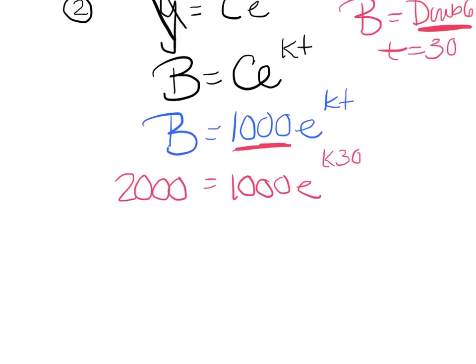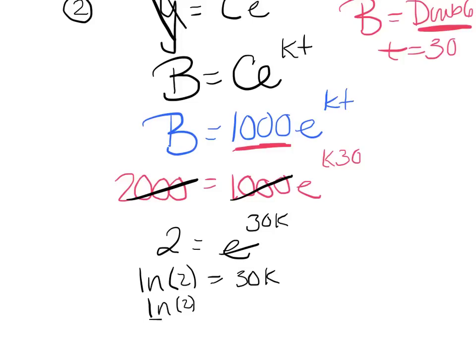Now we just quickly solve. I can divide out my 1,000. So I've got 2 equals e^(30k). Take the ln of both sides. Little zap rule there. That'll kill that. Equals 30k. And I've got ln(2)/30 equals k. Now I'm not done. If they said what is the constant of proportionality, I'm done. I've solved for k.